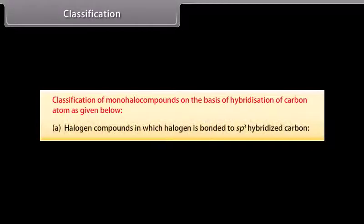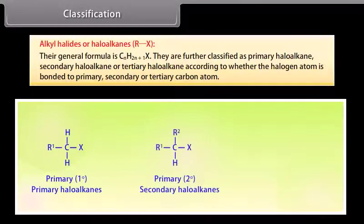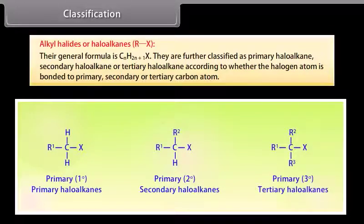Classification of mono-halo compounds is based on the hybridization of the carbon atom. Halogen compounds in which the halogen is bonded to an sp3 hybridized carbon include alkyl halides or haloalkanes (RX), with general formula CnH2n+1X. They are further classified as primary, secondary, or tertiary haloalkanes according to whether the halogen atom is bonded to a primary, secondary, or tertiary carbon atom.